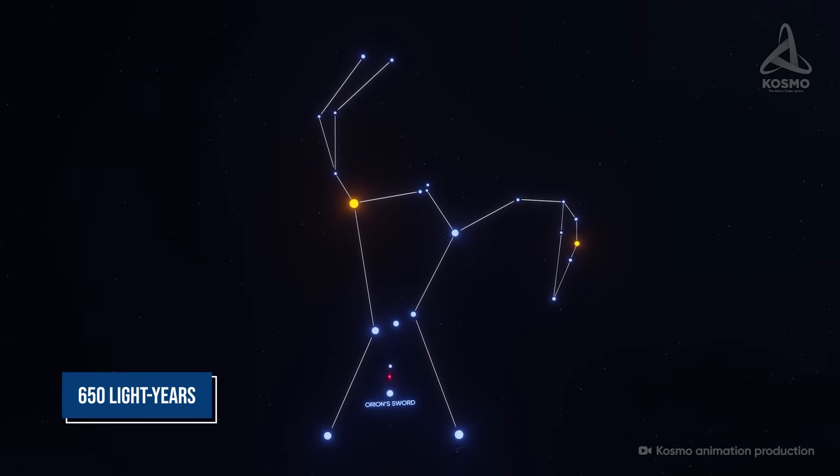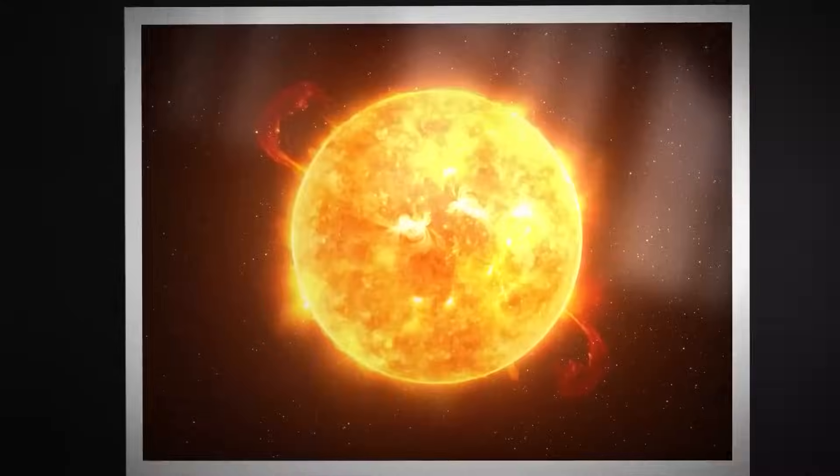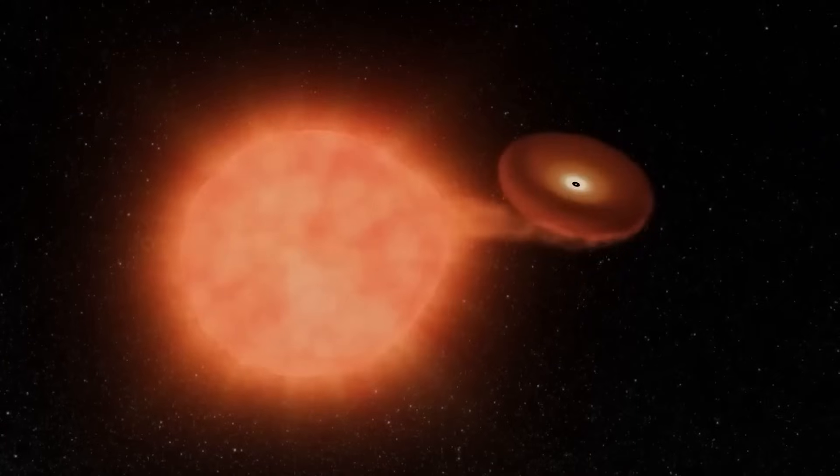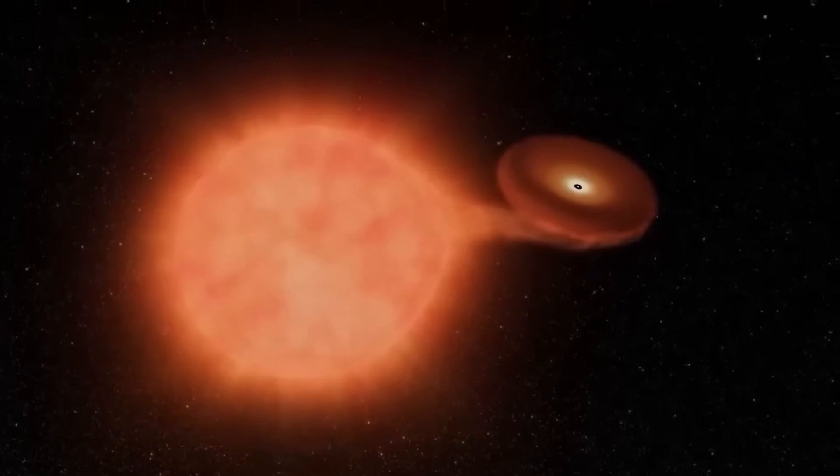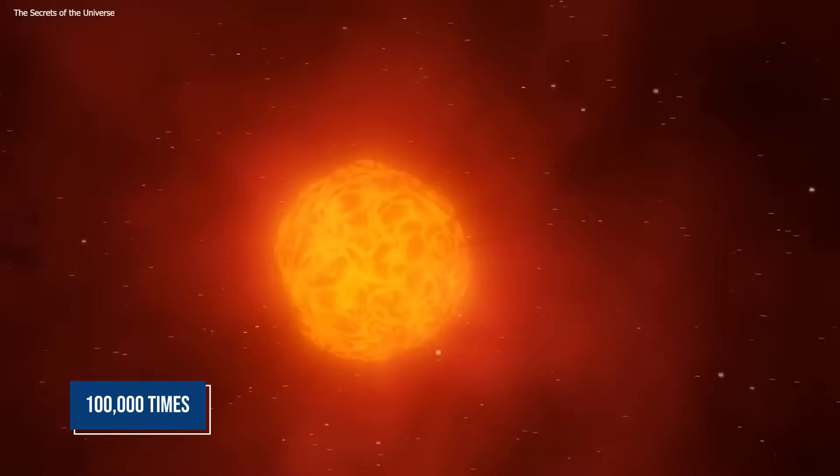Located approximately 650 light years from Earth in the constellation Orion, Betelgeuse is not just any regular star. It's a red supergiant, one of the most luminous stars known to us, shining with a brightness over a hundred thousand times that of our sun.